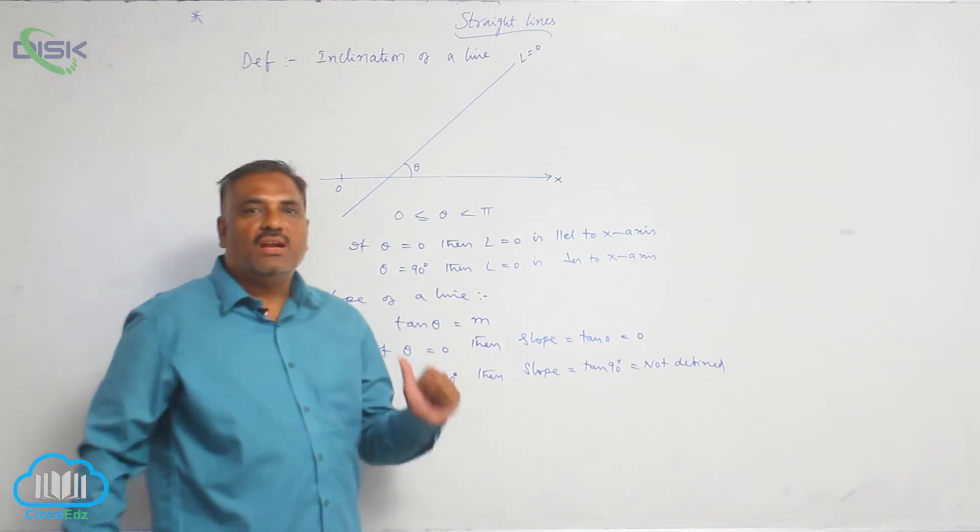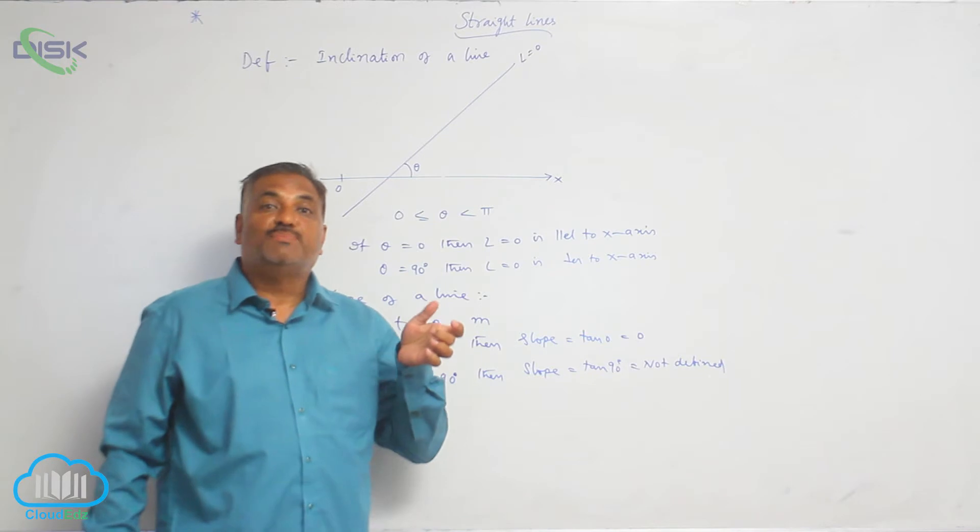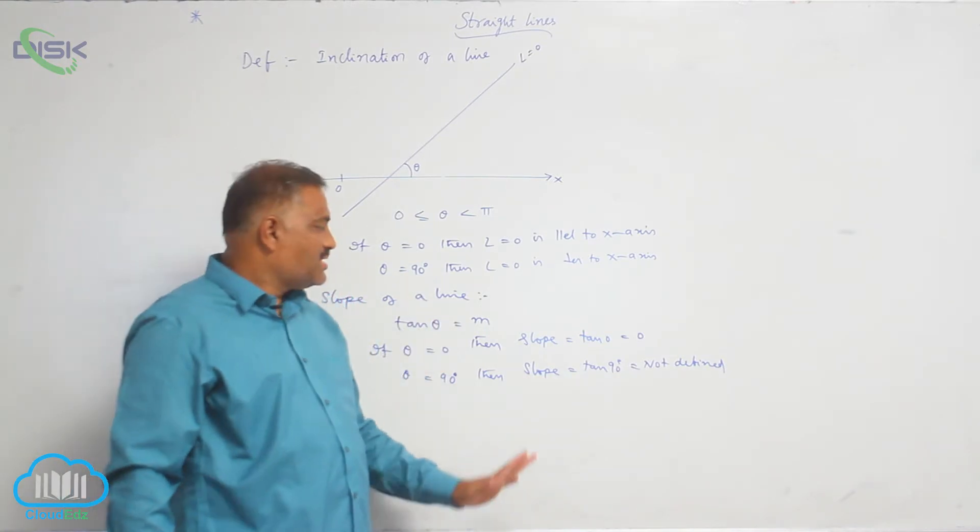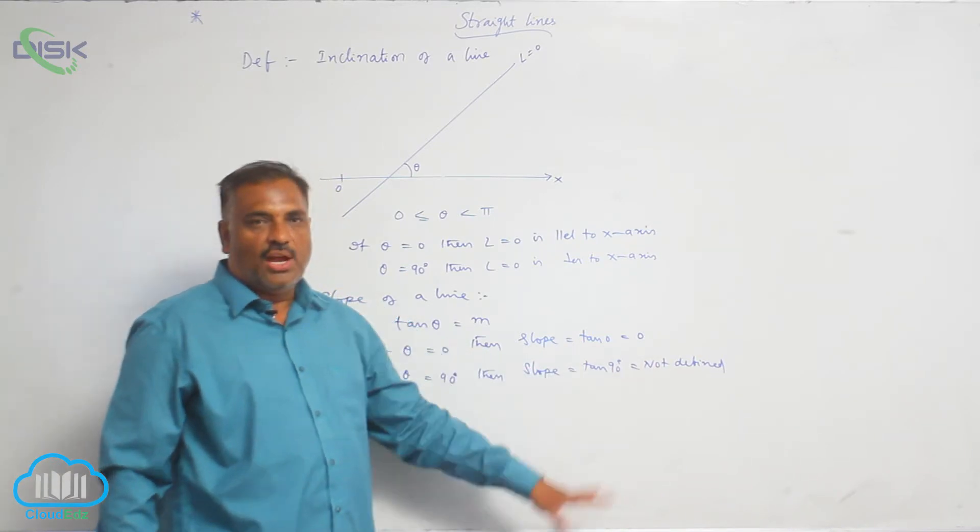So whenever we are talking about the slope of a particular line, we must specify that it is a non-vertical line. Because vertical line slope is nothing but tan 90, which is undefined.